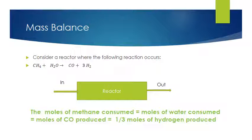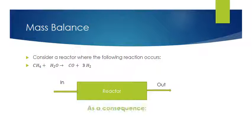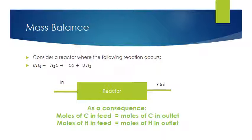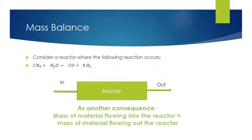This means that the moles of methane consumed in the reactor is equal to the moles of water consumed in the reactor, which is also equal to the moles of CO produced in the reactor, and is equal to one-third of the moles of hydrogen produced. As a consequence, the number of moles of carbon in the feed must equal the moles of carbon in the outlet, and similarly for hydrogen and oxygen — the atoms in the feed must equal the atoms in the outlet. The mass of material flowing into the reactor must equal the mass flowing out.